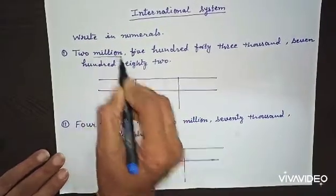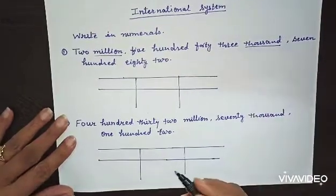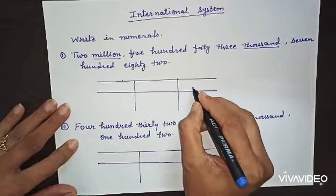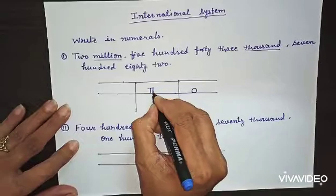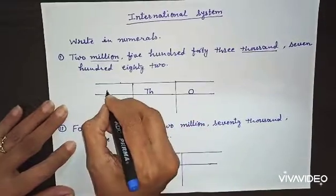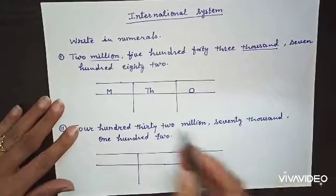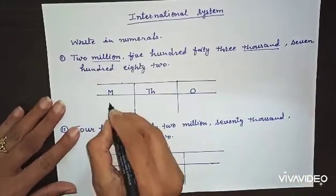Now important points are million and thousands. As we know in international system, periods are divided like this: first period is ones, second one is thousands, and third one is millions. Now it is very clear, two million, so we will write down M.